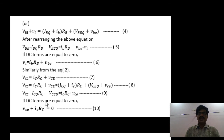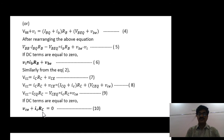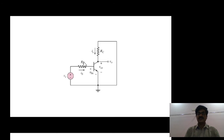Equation 6 represents a Vi source at the input loop, an RB resistor, and base-to-emitter drop VBE. At the output, we have VCE (collector-to-emitter drop) and IC·RC (drop across collector resistor). In the resulting diagram, there are no DC sources — all DC sources are shorted to ground. This is how you develop the AC equivalent circuit for the given circuit.